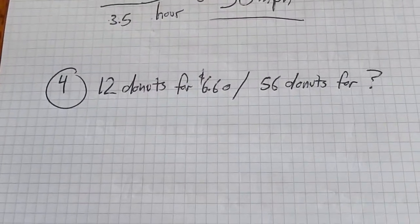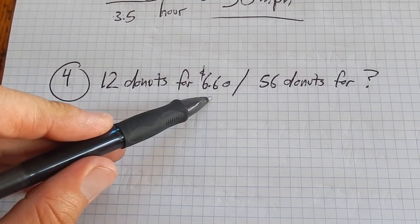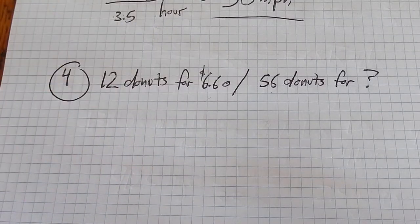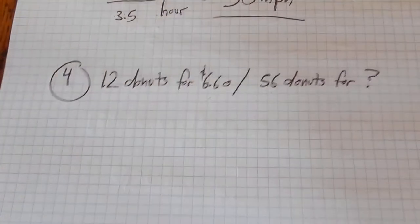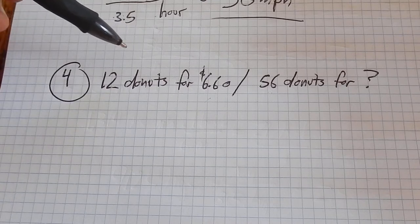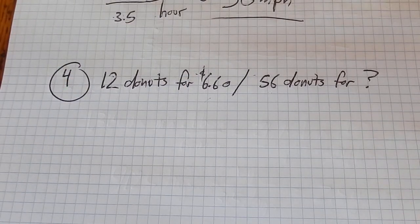Number four: 12 donuts cost $6.60, and our hero Ed wants 56 donuts. How much should they cost? So this is a proportion problem. There's a couple different ways you could do it. You could figure out how much one donut would cost and then just multiply that by 56. That would work.